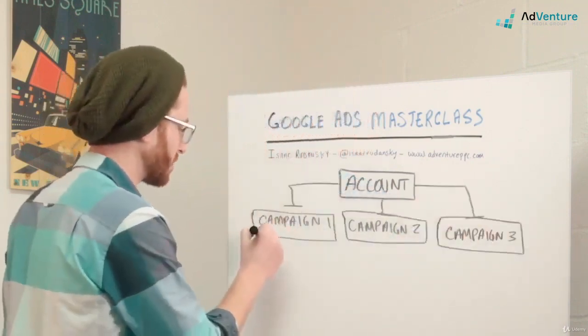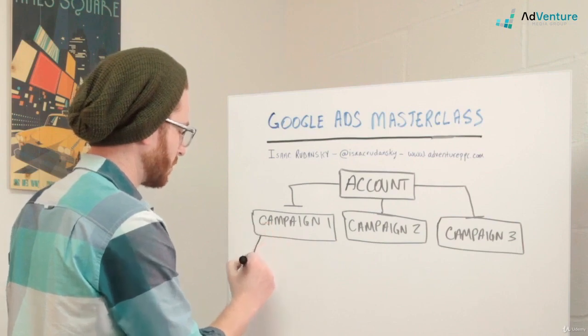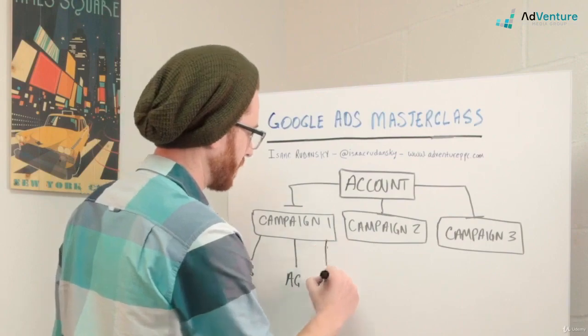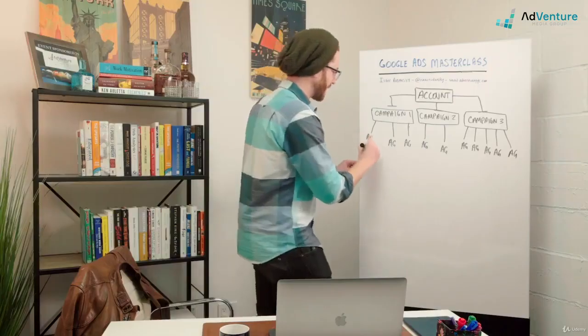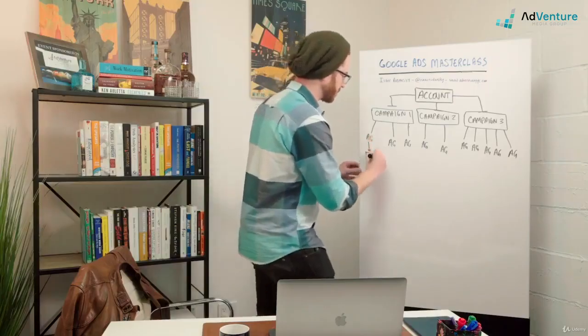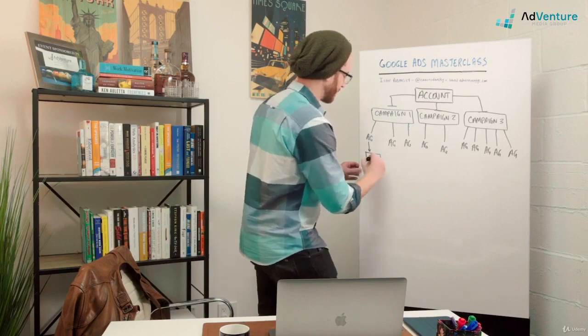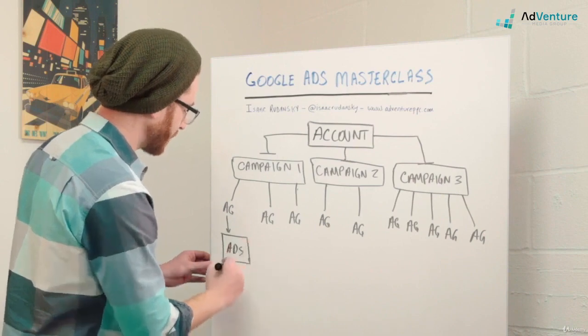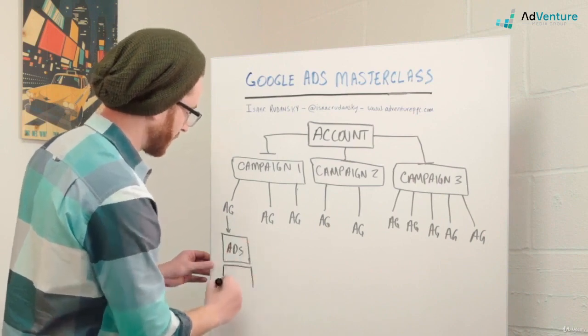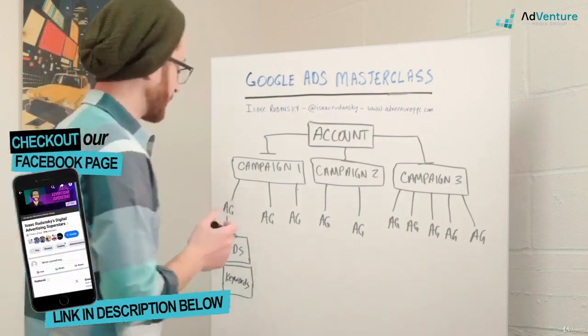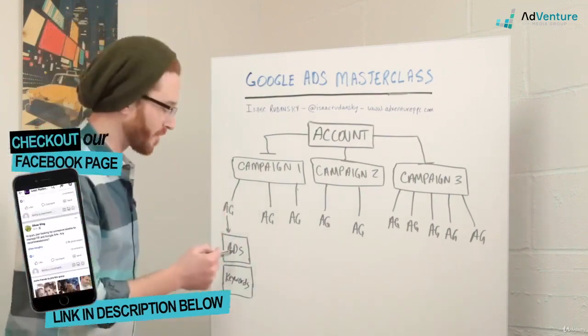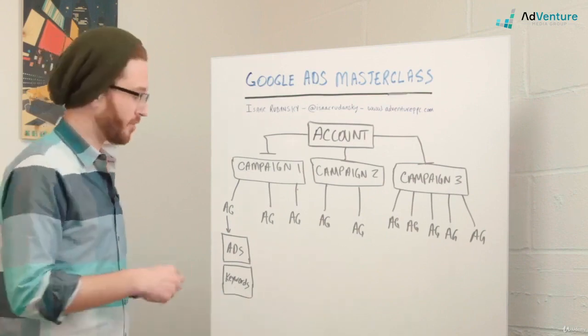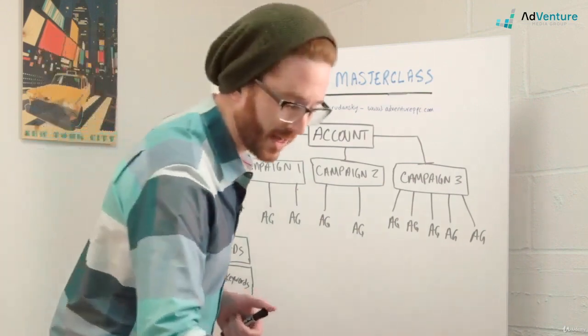Within campaigns, you have what's called ad groups. Inside each ad group are two things that operate on the same level of the hierarchy. You have ads and you have keywords. Ads and keywords are both contained inside every ad group. You need to have both ads and keywords in every single ad group in order for that ad group to function. If you're missing one of those two things, then nothing will function inside those ad groups.